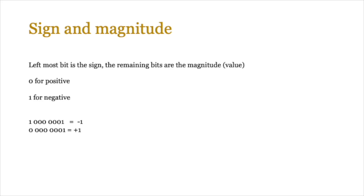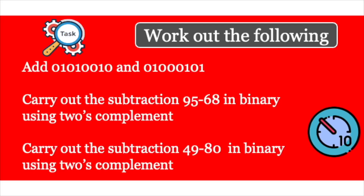Now let's put our learning into action. You have about 10 minutes to try the following: carry out the subtraction 95 minus 68 by converting 68 to its twos complement negative representation and then performing addition. Then try 49 minus 80, again using twos complement. It might take longer than 10 minutes and that's okay — pause the video and work through these.